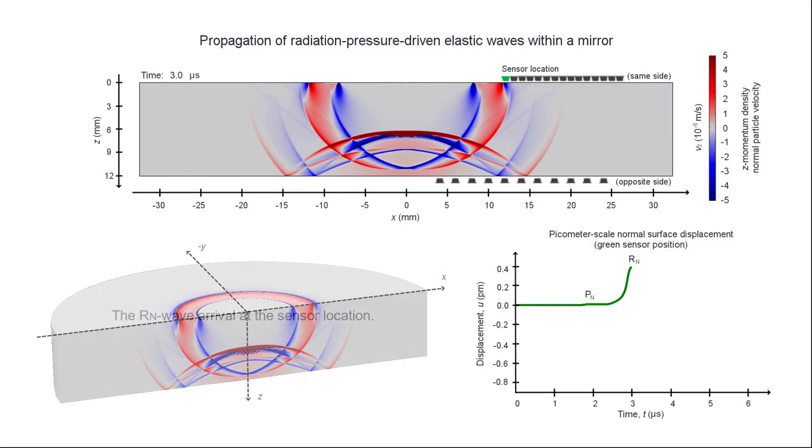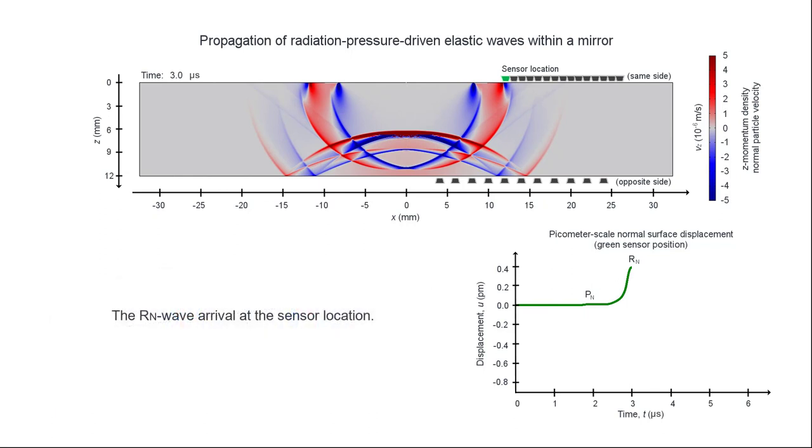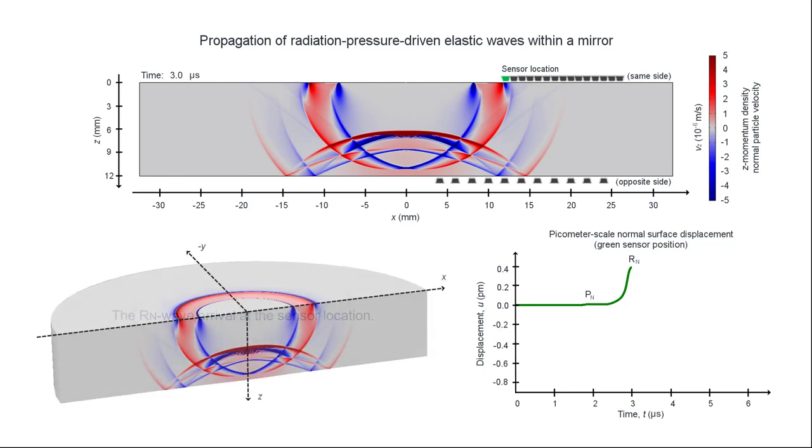Going back to the displacement waveforms, the feature here corresponds to the arrival of the Rayleigh wave generated on the nearer edge of the illuminated area.